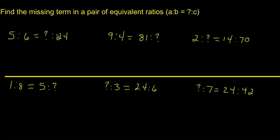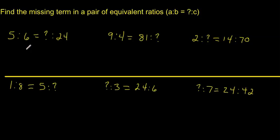In this video I'm going to explain how to find the missing term in a pair of equivalent ratios. For example, if we have a situation where we've got two numbers, and we've got part of an equivalent ratio but one of the numbers is missing, I'm going to show you how to work that out. We've got six examples here, and the missing numbers are in different places, so by the time you're done you should have a pretty good idea how to work that out without any problem.